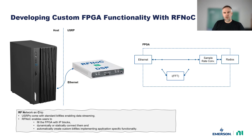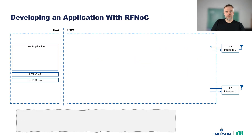Let's explore how this is done using a two-antenna USRP such as the USRP X310, which is connected over Ethernet to a host computer as an example. We start from an empty USRP, shown on the right-hand side, which has two radios and basic FPGA infrastructure that NI provides. We also have a host computer that runs the user application, which interacts with the USRP through the RFNOC API offered by the UHD driver.